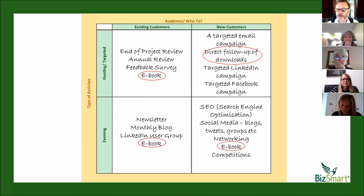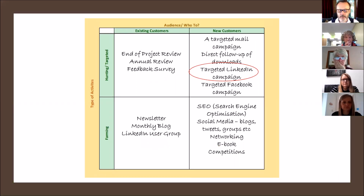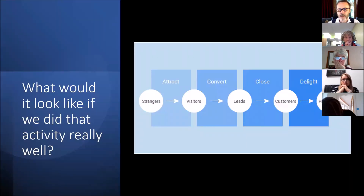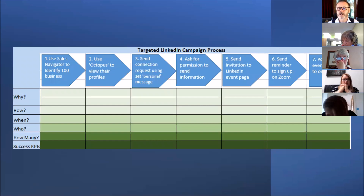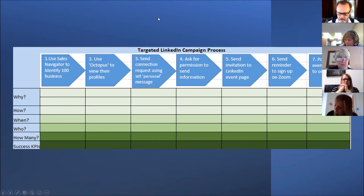The question then is: what does really good look like? If we're going to do one or two key activities, we need to define excellence. Taking a targeted LinkedIn campaign as an example — this is something Caroline does very successfully to drive people to our online engagement events. We use Sales Navigator to identify target businesses using search criteria, then use a tool called Octopus to view people's profiles so they can see we've looked at them, then start a personal message asking permission to send information, and invite them to our LinkedIn page to register via a private Zoom link.